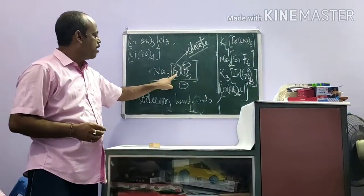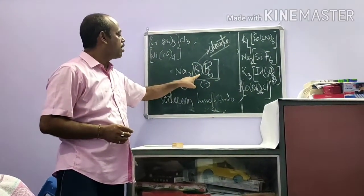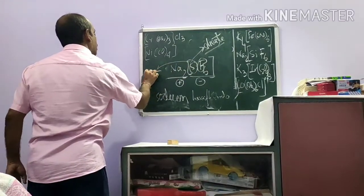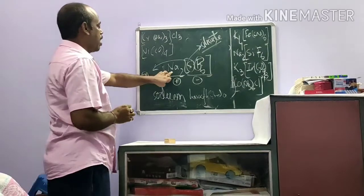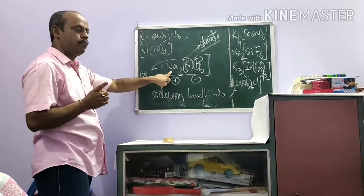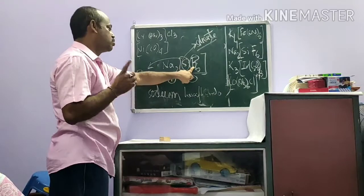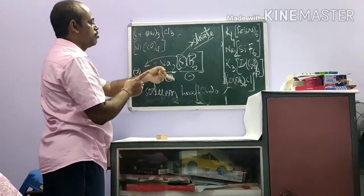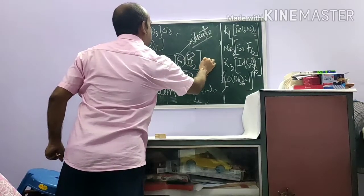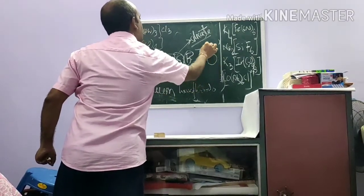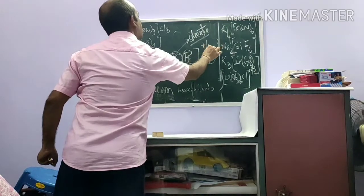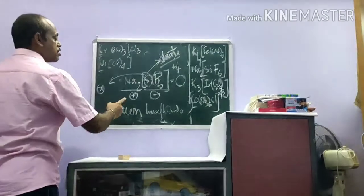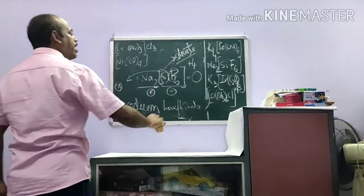Now calculate the oxidation number of silicon. Let it be x. Sodium is +1 × 2 = +2, and fluoride is −1 × 6 = −6. Adding +2 and −6 gives −4. Since the complex is neutral (equals 0), the value of x is +4. So the full name is sodium hexafluoridosilicate(IV).